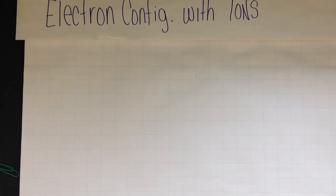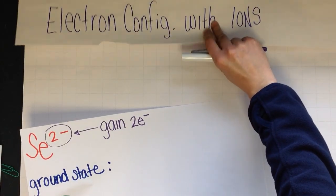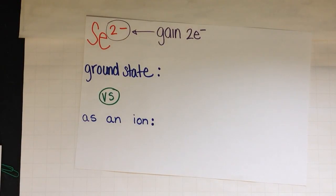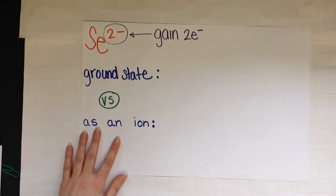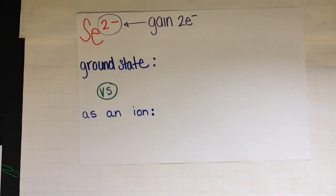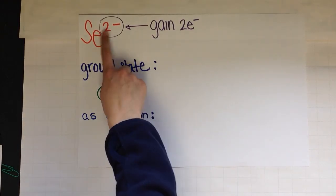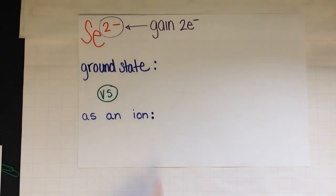Okay, so let's take a look at an ion. If you notice here, I have selenide, which was selenium but now it's an ion, and I have a two minus which means I have an anion. And this two minus means that I gained two electrons. Remember, when it's negative you've gained.